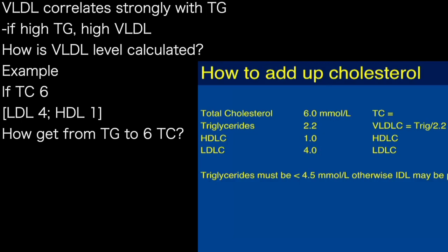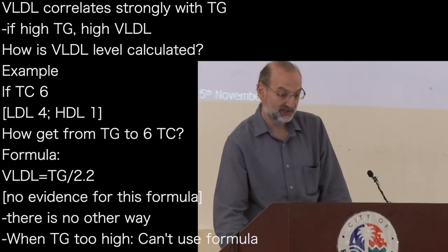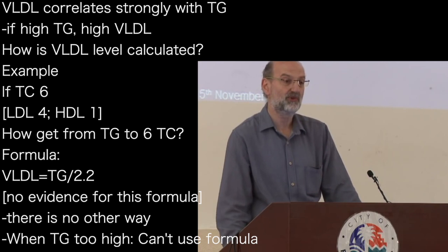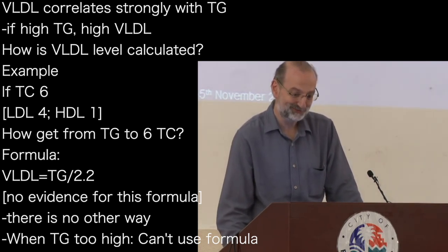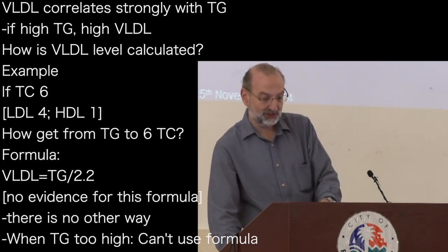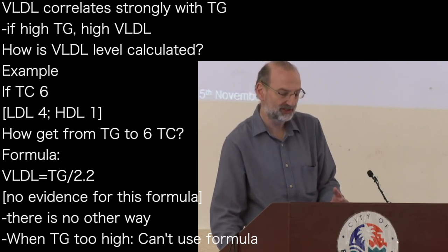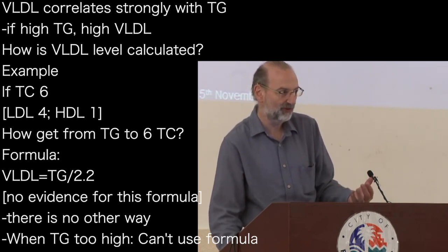People often ask me how these numbers add up. If the total cholesterol is 6, the bad cholesterol is 4, and the HDL is 1 — well, 2.2 and 5 does not make 6. We work out how much VLDL cholesterol there is from the triglycerides divided by 2.2. That's a formula we use even when we don't have strong evidence for it, because there's no other way of working out how much VLDL cholesterol there is. And we're not supposed to use that calculation when triglycerides are too high, because when triglycerides are high, the particles start crashing into each other and the whole formula breaks down.